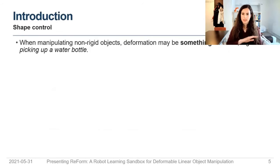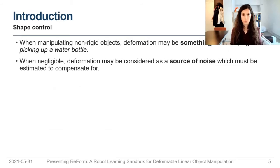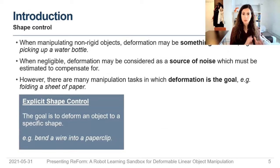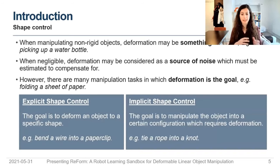Sometimes deformation is information we want to avoid — like when picking up a bottle we want to avoid spilling by pressing too much. Sometimes it can be considered as a source of noise in our manipulation task. However, there are many manipulation tasks where deformation is the actual goal, and we can categorize them into two main classes: explicit shape control, where the goal is to deform the object into a specific shape such as bending a wire into a paper clip, and implicit shape control, where the goal is to manipulate the object into a configuration that satisfies a more abstract concept like tying a rope into a knot.